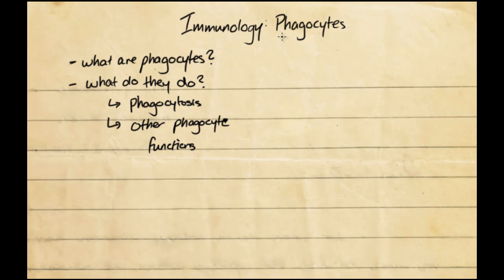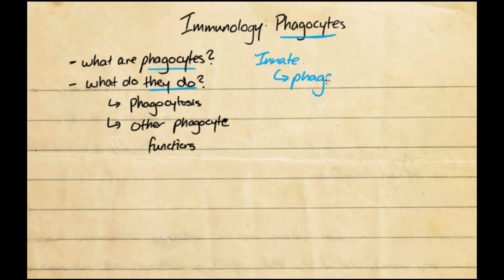In this video I'm going to be talking about phagocytes — what they are, what they do, and the basic concepts behind them. From a previous video we talked about the innate immune system briefly, and said it had humoral and cellular arms. Under the cellular component of the innate immune system are phagocytes. The cells classed as phagocytes are the neutrophils and the macrophages.